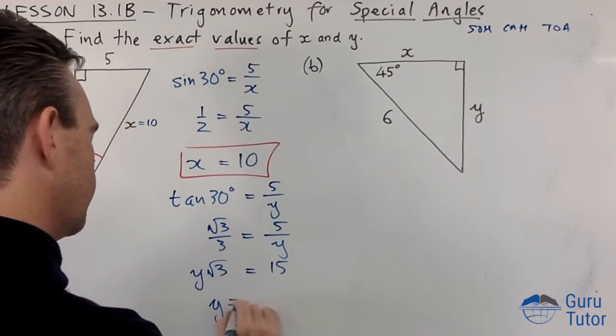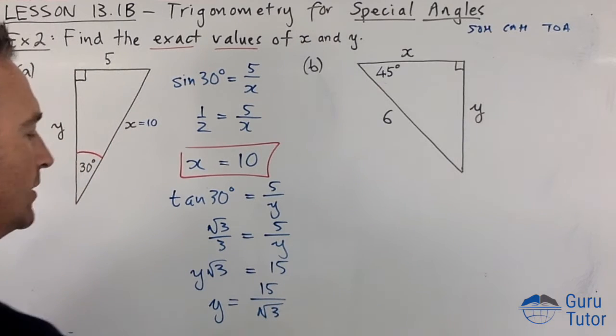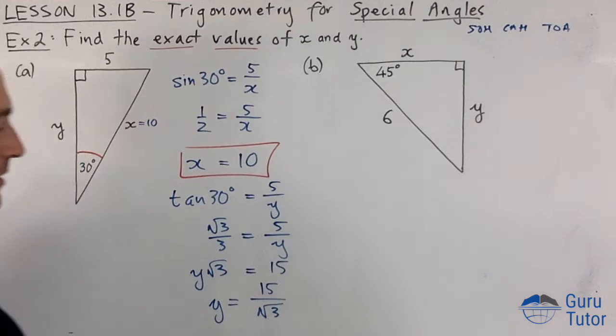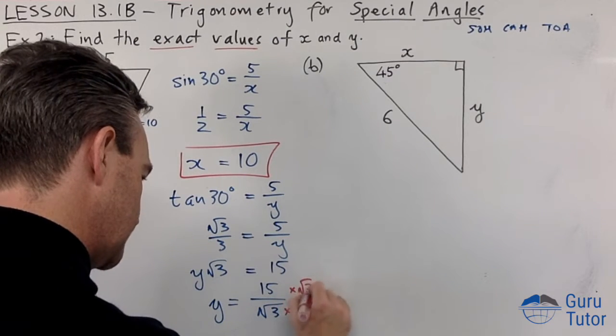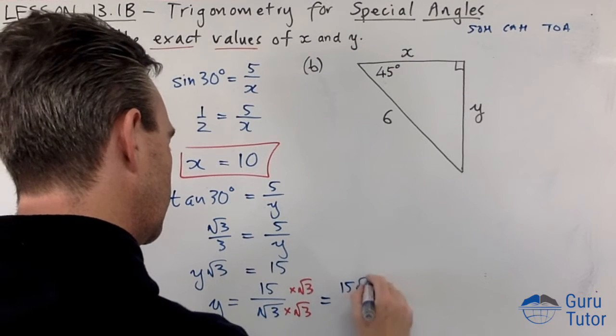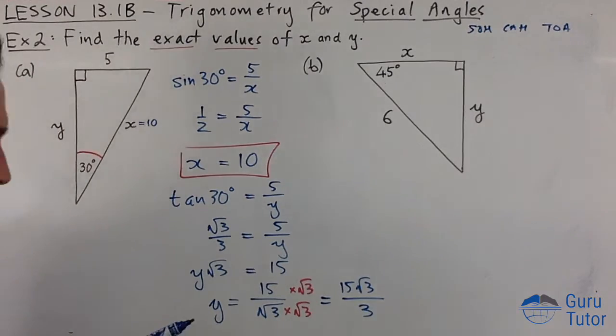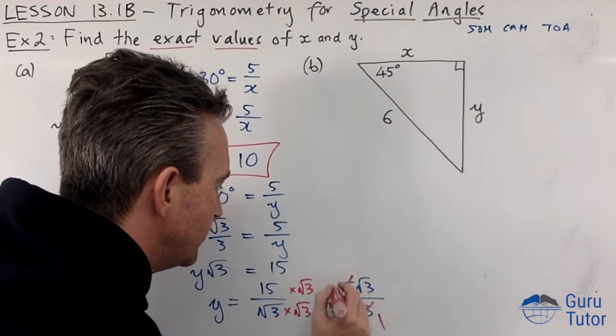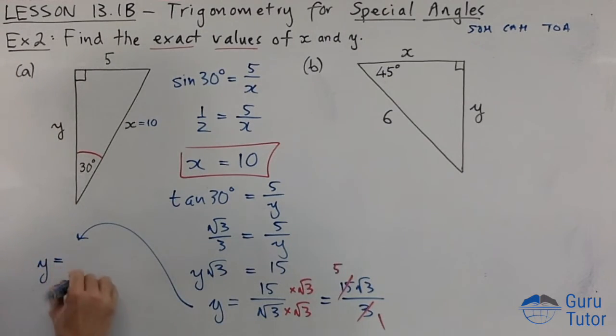So y equals 15 over root 3, and we've broken our golden rule again, we've got a radical on the bottom, naughty naughty. Let's multiply bottom and top by root 3, which will give us 15 root 3 over 3, and that will cancel. 3 goes into 3 once, 3 goes into 15, 5 times. I might write the answer over here. Y equals 5 root 3.